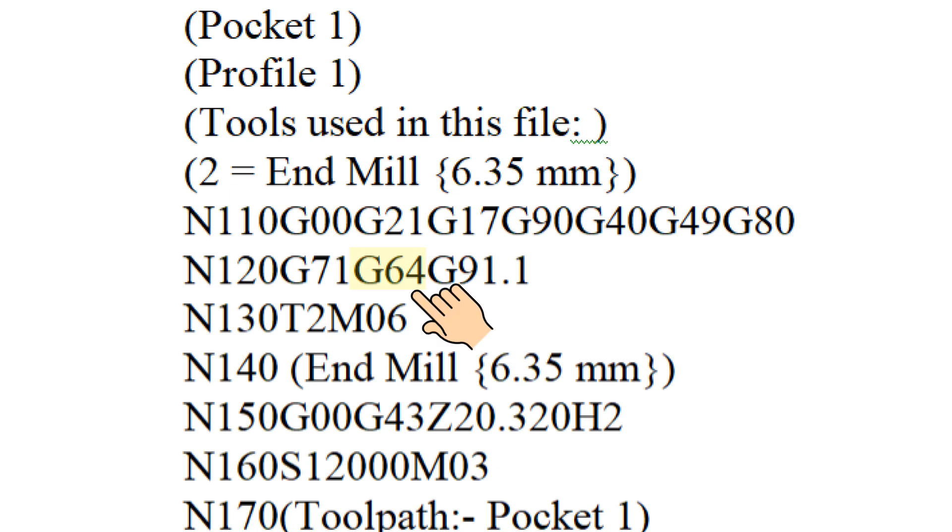Now, you might say to me: but I don't run Constant Velocity on my machine. But are you sure? Check your G-code file in the header section. If you see a G-64 command, that means run in Constant Velocity mode. If you see a G-61, that means run in exact stop mode. If the G-64 command is present and you've enabled Constant Velocity on your machine, then your machine is probably running in Constant Velocity mode. Even if you don't see the G-64, you may already have the machine set up to always run in Constant Velocity mode.